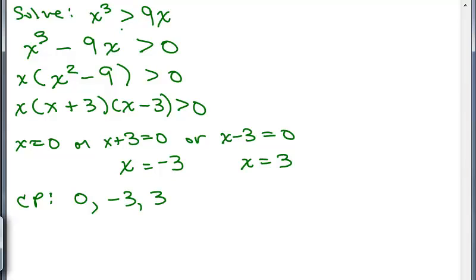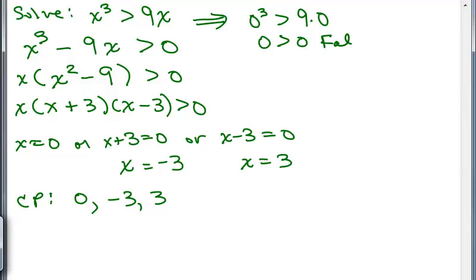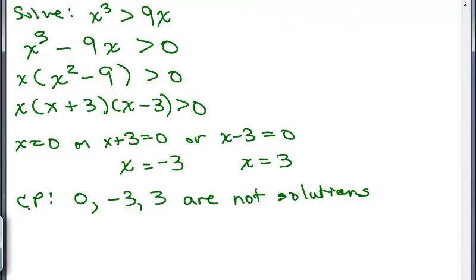Notice this is strictly greater than. That means if I plug in a critical point into the original inequality, for example plugging in 0: 0 cubed greater than 9 times 0 gives 0 greater than 0, which is false. So the critical points are not solutions. The same thing happens if you put in 3 or negative 3. Since they're not solutions, we're going to put circles on the number line.